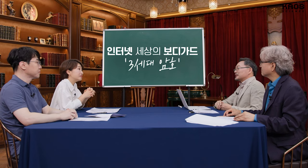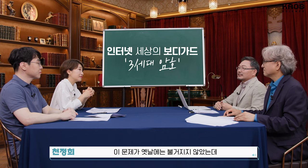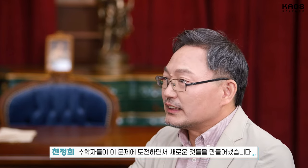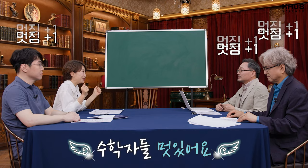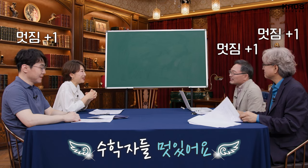맞습니다. 3세대 암호는 정확한 지적이십니다. 이 문제가 옛날에는 불거지지 않았는데 1970년대가 돼서 인터넷이 발달하기 시작하니까 이런 요구조건이 생겼습니다. 처음에는 이거는 풀 수 없는 문제라고 생각을 했었는데, 수학자들이 이 문제에 도전을 하면서 새로운 것들을 만들어냈습니다. 수학자들 멋있어요. 그래서 어떻게 해결을 한 건가요?